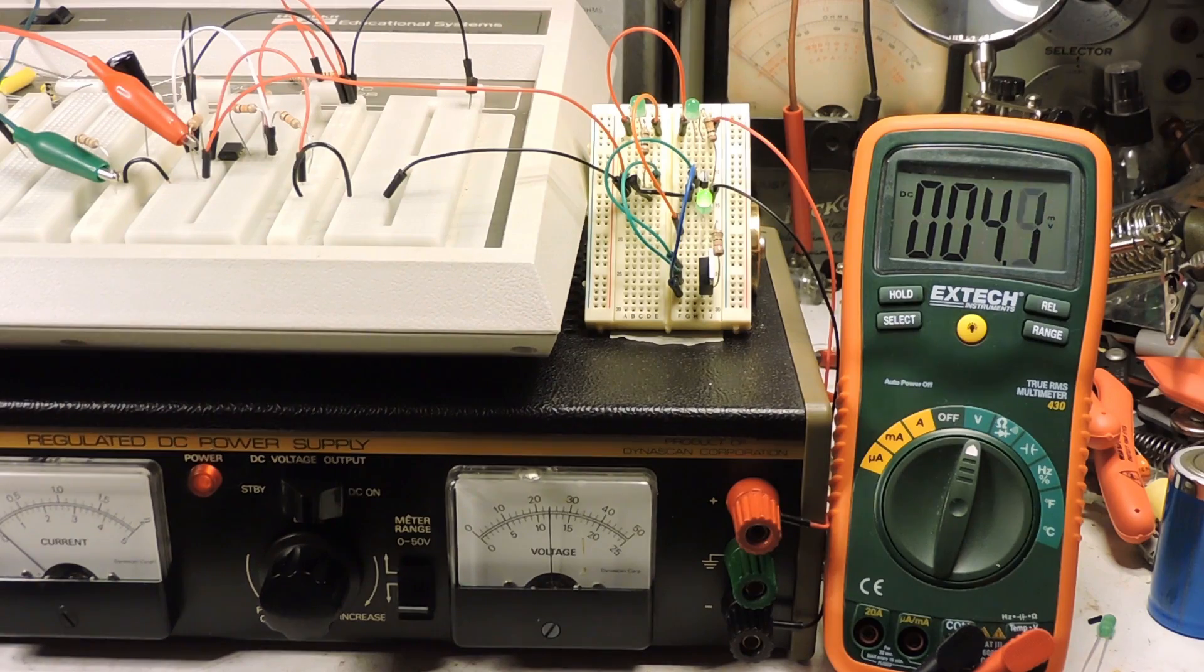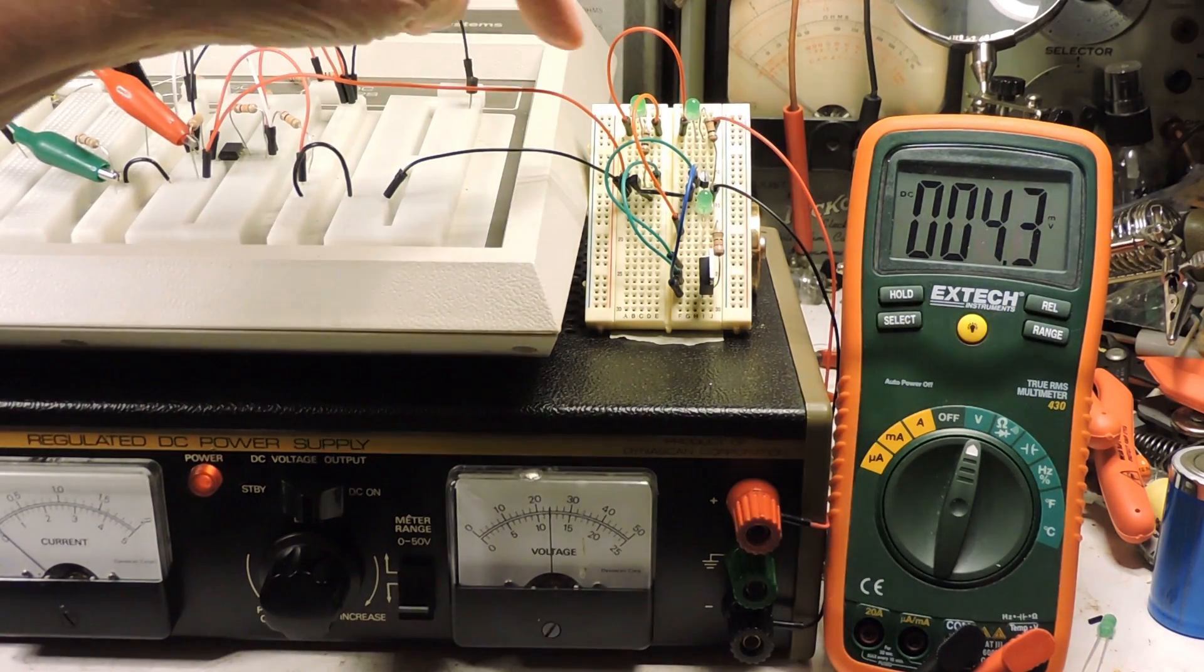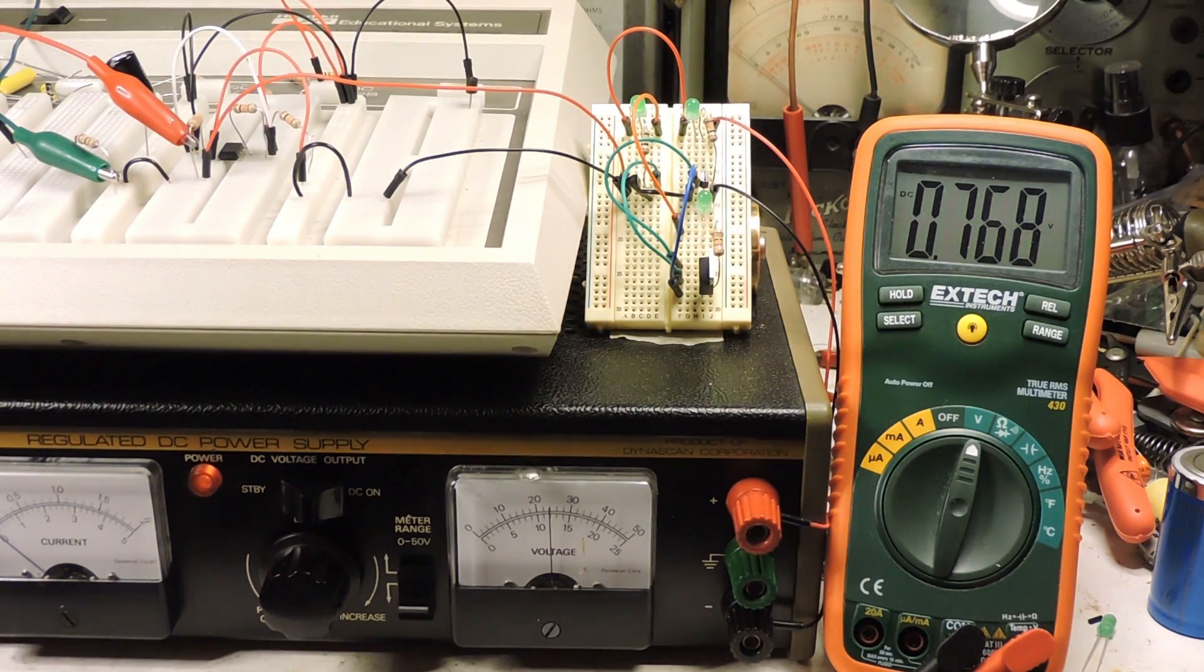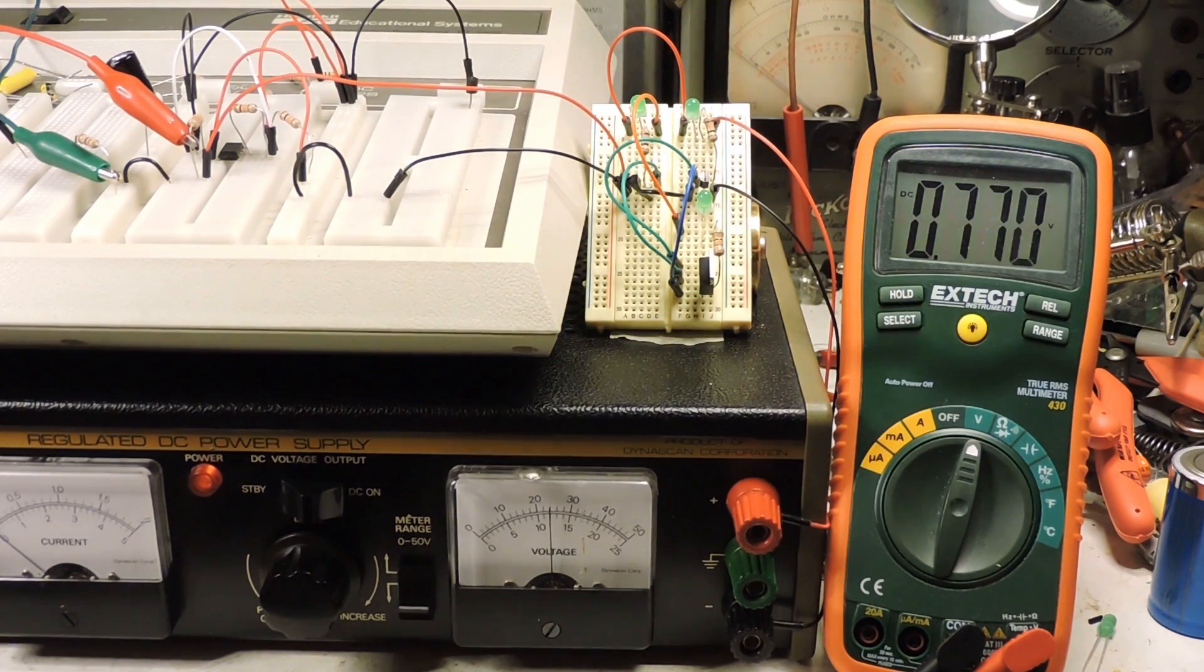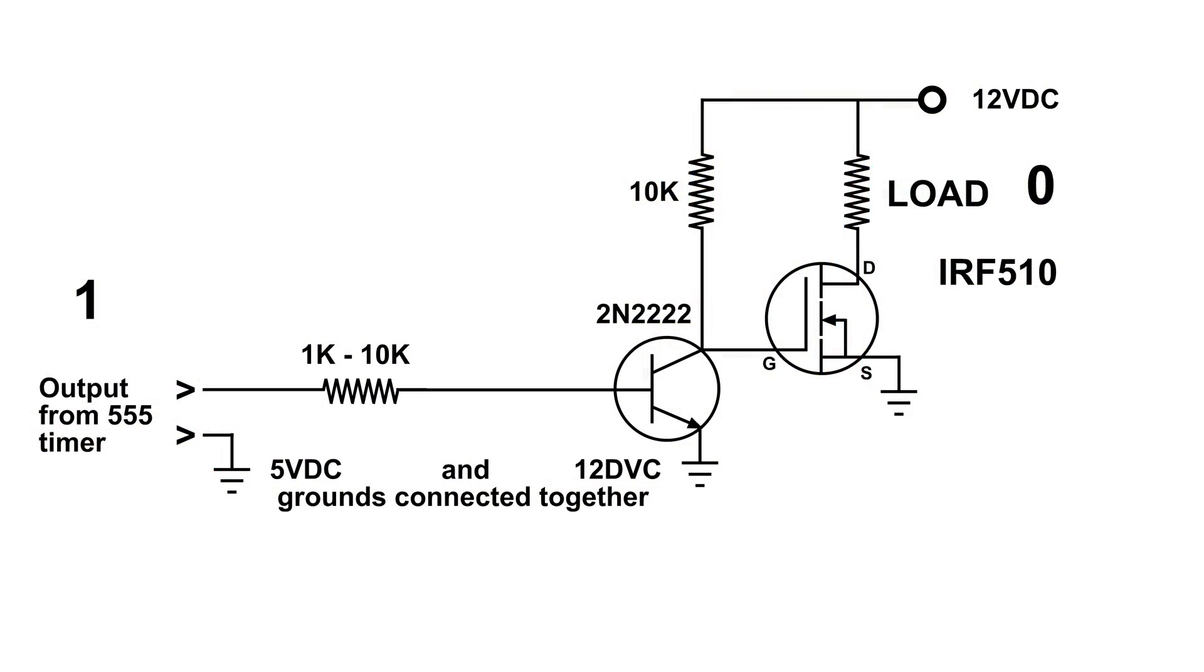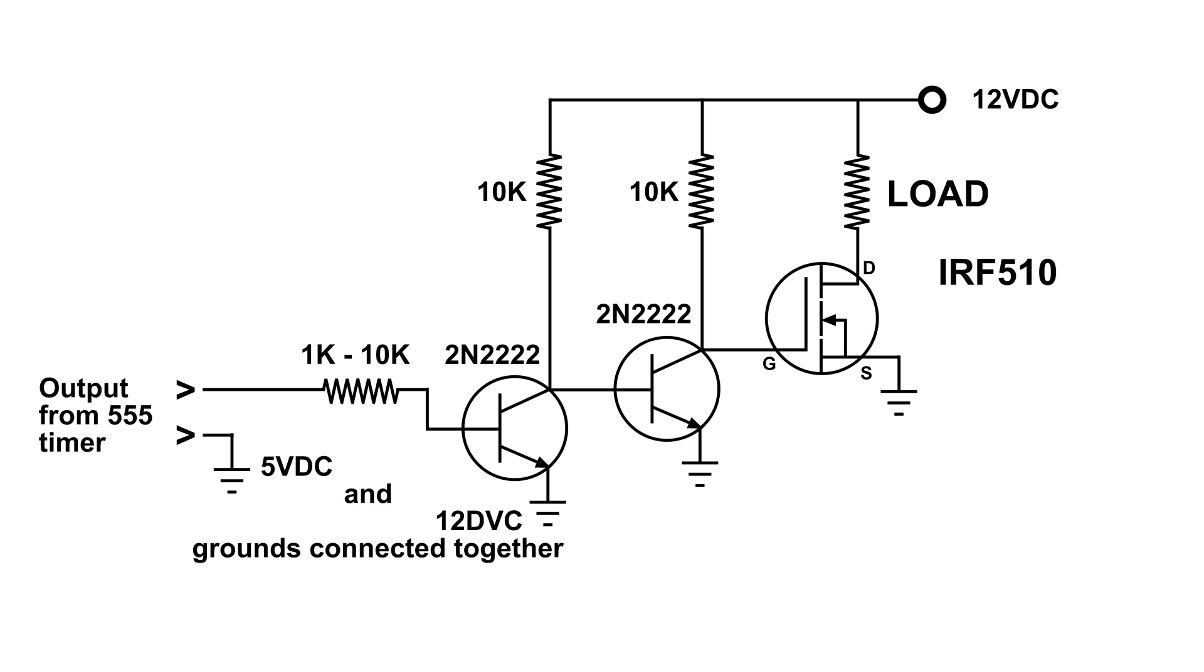This is with one NPN transistor. Now I'm going to hook up the other NPN transistor and we'll see that we have positive logic. If you want whatever it is you're controlling to be on when the 555 timer is high, well here is one solution.